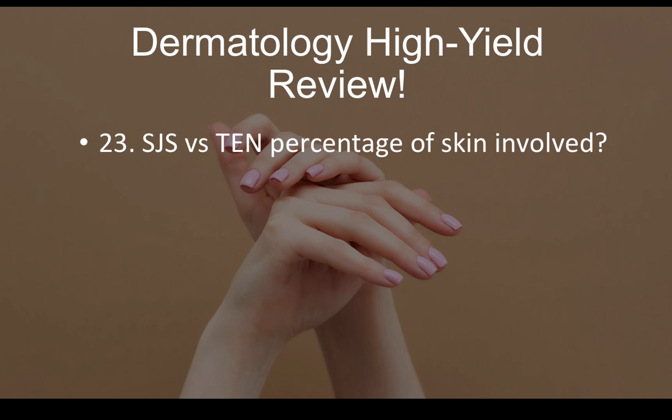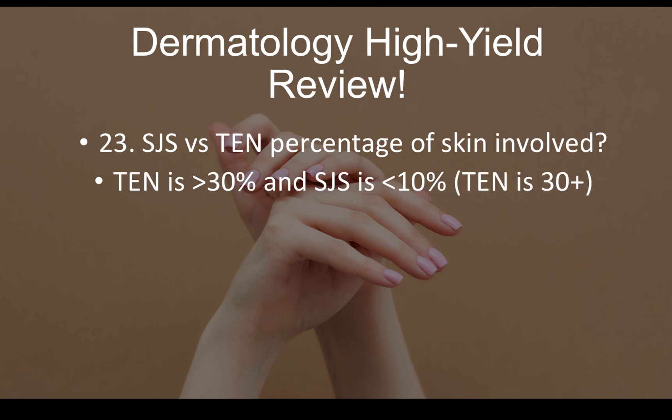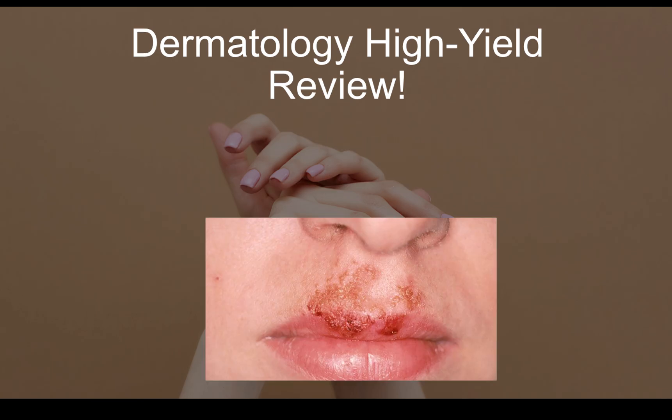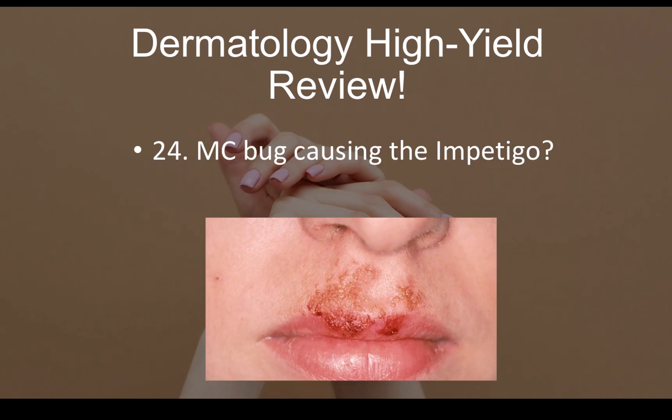Question number twenty-three: Stevens-Johnson syndrome (SJS) versus toxic epidermal necrolysis (TEN) — TEN involves greater than 30% of the skin and SJS is less than 10%. The mnemonic: TEN is 30-plus, SJS is less than 10. If you see 30-plus percentage in the stem, think TEN; less than 10, think SJS.